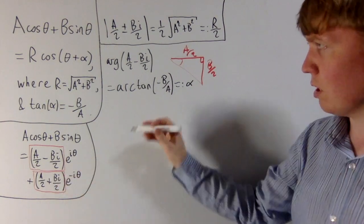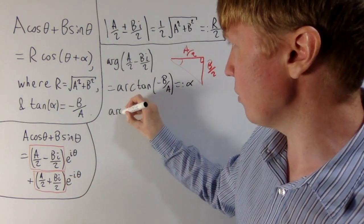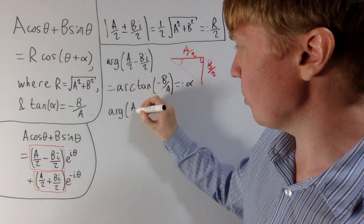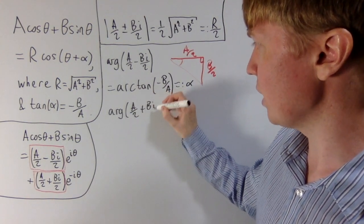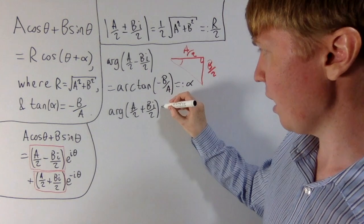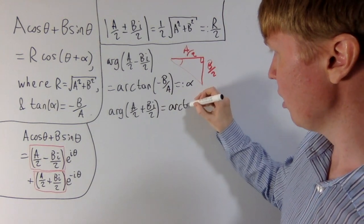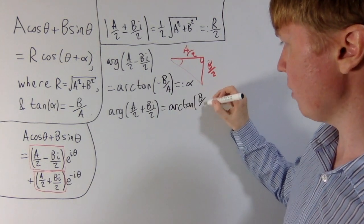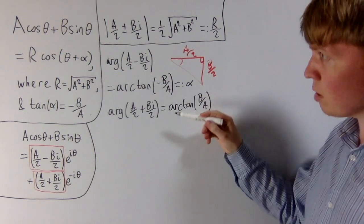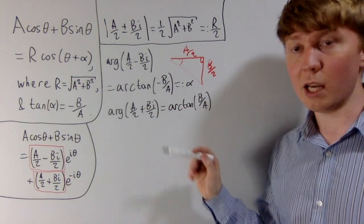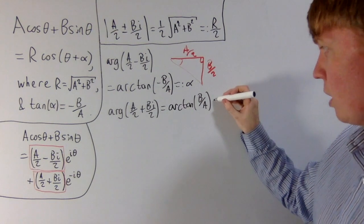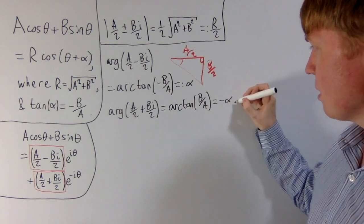What about the argument for this complex number? Well, you can use a similar sort of argument, perhaps split up into cases depending on if A and B are positive and negative. But ultimately you get that this is equal to arctan, now just a B over A without any negative sign here. So using the symmetry of the arctan function, arctan of minus B over A is alpha, so arctan of B over A without the minus sign is minus alpha.